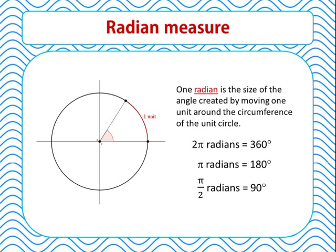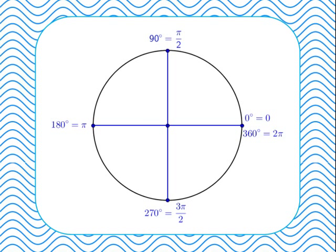If 2π radians is 360 degrees, then π radians is 180 degrees, and π/2 radians is 90 degrees. Starting from the basic points around the unit circle, measuring angles from the positive x-axis in an anti-clockwise direction: at the right we have 0 degrees and 0 radians. Turning 90 degrees anti-clockwise gives 90 degrees or π/2 radians. A further 90 degrees gives 180 degrees or π radians. Another 90 degrees gives 270 degrees or 3π/2 radians. And a further 90 degrees gives 360 degrees or 2π radians.